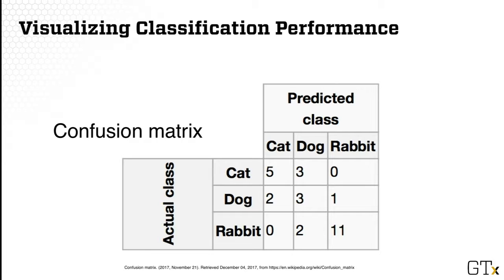The columns here are the predicted class, so the same number of classes: cat, dog, and rabbit. The cells in the matrix show you exactly how many of the data instances are correctly classified and how many of them are wrongly classified.